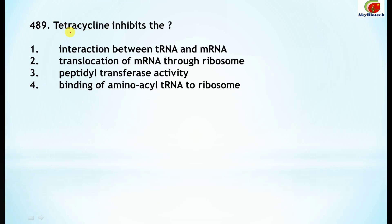Question 489: tetracycline. Many examination questions ask which drug inhibits what — these are very important and have appeared repeatedly in many examinations including CSIR NET and DBT. You should learn each and every drug. Tetracycline inhibits the binding of aminoacyl-tRNA to the ribosome.